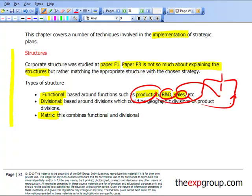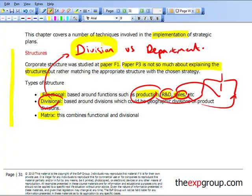The second one is divisional. Divisional is based around divisions, and these divisions could be geographic divisions or product divisions. As a reminder, what's the distinction between a division versus a department? The easiest way to remember it is divisions tend to cover larger areas, bigger things. So you could have an accounting department, or a European division, or an Asian division. Divisions tend to be bigger.